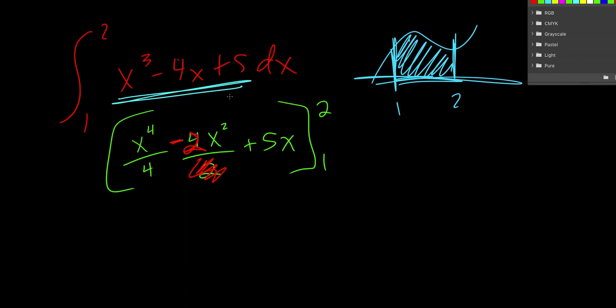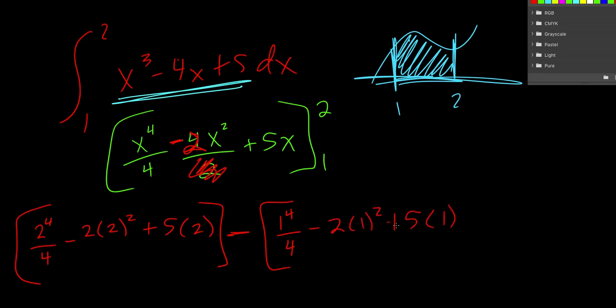What I'm going to do is plug in a 2 for all the x's first. So we get 2 to the fourth over 4 minus 2 times 2 squared, plus 5 times 2. Now we take all that stuff, and we subtract it from what we get when we plug in a 1 for all the x's. Now we just need to evaluate all this.